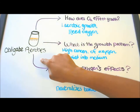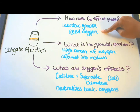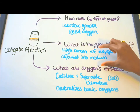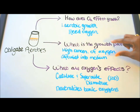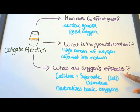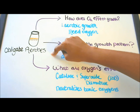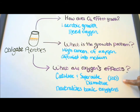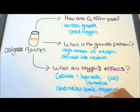Obligate aerobes. Oxygen is required for their growth. Their growth pattern is that there is a high concentration of oxygen diffused into the medium. What are the effects of oxygen? These microbes can produce enzymes called catalase and superoxide dismutase, or SOD for short, and these enzymes neutralize toxic oxygens that are present.